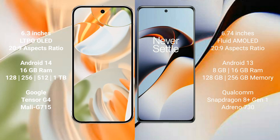The Google Pixel 9 Pro comes with 16GB RAM and internal storage options of 128GB, 256GB, 512GB, and 1TB. It is powered by the Google Tensor G4 processor.